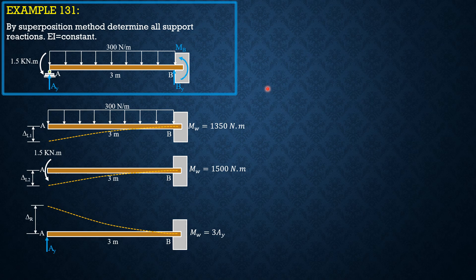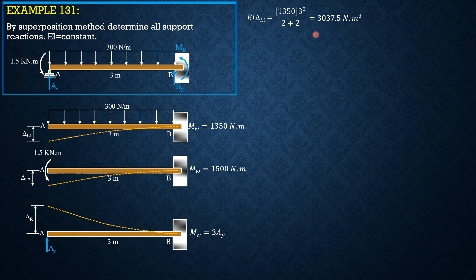So EI delta L1 is equal to 1,350 times 3 squared all over second degree plus 2, 2 plus 2. So in Newton meter cubed, 3,037.5 Newton meter cubed.